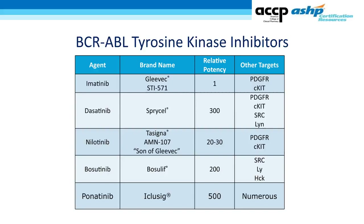There are five BCR-ABL tyrosine kinase inhibitors currently on the market. Imatinib was the first released and completely overhauled the treatment of CML. The second-generation agents are dasatinib, nilotinib, and bosutinib. Ponatinib has very high relative potency compared to imatinib but also has interesting side effects that make it not a first choice. Importantly, although these agents target BCR-ABL tyrosine kinase, they also have numerous other targets that translate into specific adverse events for each agent.